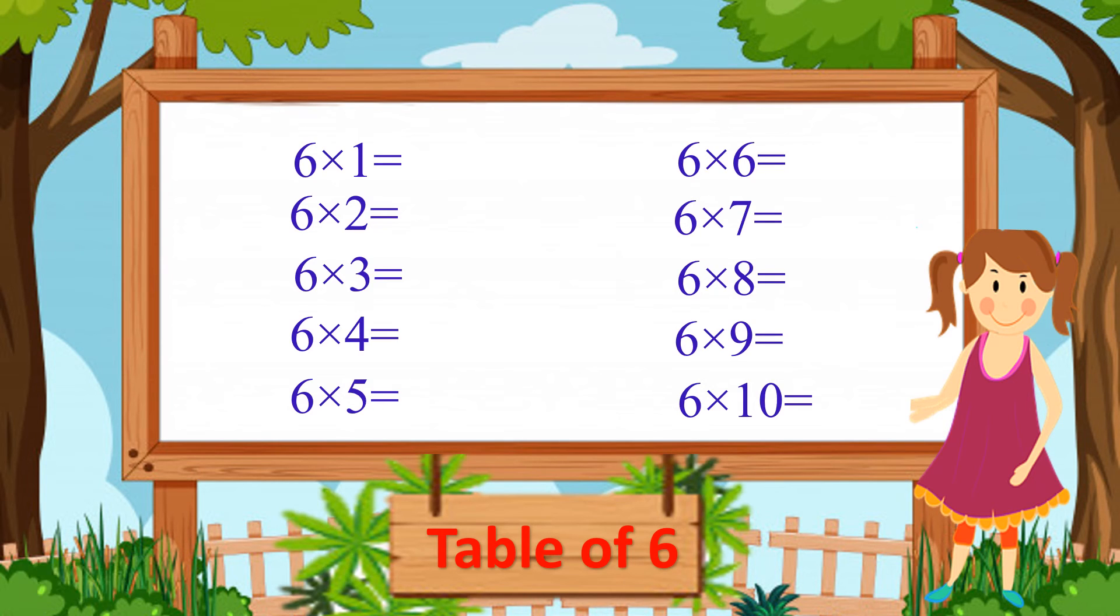Yes, so let's start. Six ones are six. Six twos are twelve. Six threes are eighteen. Six fours are twenty-four. Six fives are thirty. Six sixes are thirty-six. Six sevens are forty-two. Six eights are forty-eight. Six nines are fifty-four. That's right. Six tens are sixty. Great job.